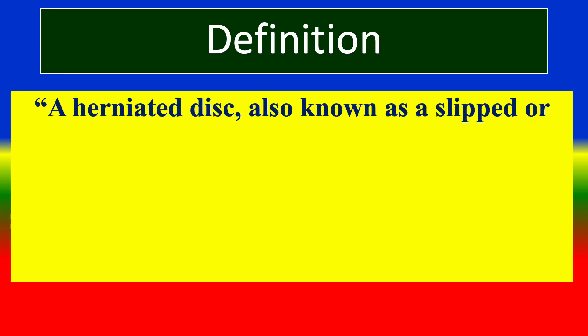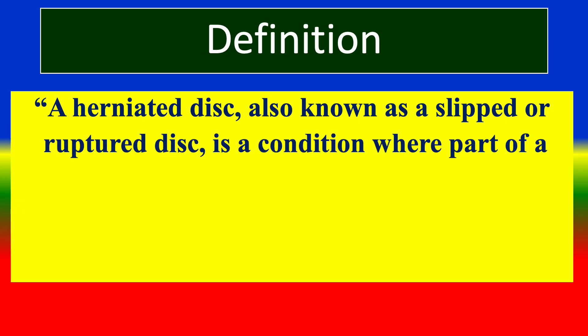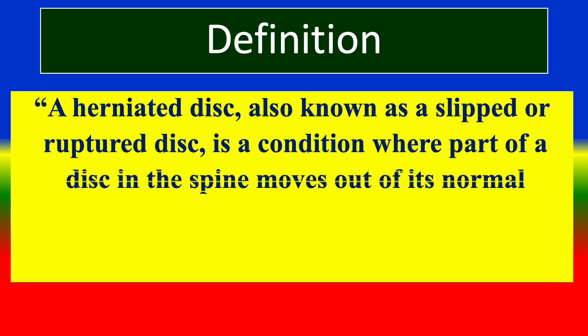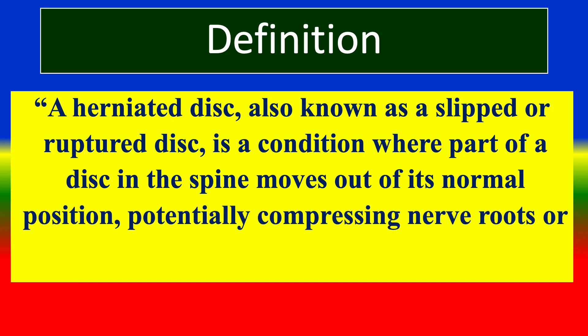A herniated disc, also known as a slipped or ruptured disc, is a condition where a part of a disc in the spine moves out of its normal position, potentially causing compression of nerve roots or the spinal cord.